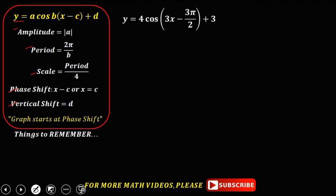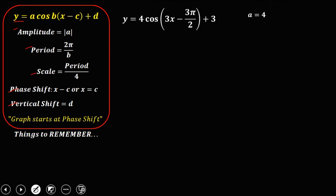We have this given: y equals 4 cosine of (3x minus 3π/2) plus 3. From this given, a is equal to 4, b is 3, and d is positive 3.